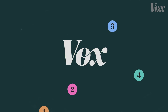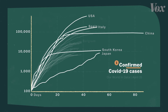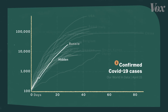First, this is not a chart of all coronavirus cases. It's only showing us confirmed cases. That means each line doesn't just reflect the state of the outbreak in a country, but also how aggressively that country is testing people for the virus.